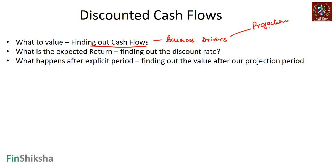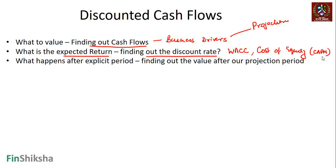The second aspect is what is the expected return — how do we find the discount rate. We've already covered some of this in earlier courses. We know how to calculate weighted average cost of capital, and we know how to calculate cost of equity using the CAPM model. We have methods to estimate the expected rate of return from a particular company.